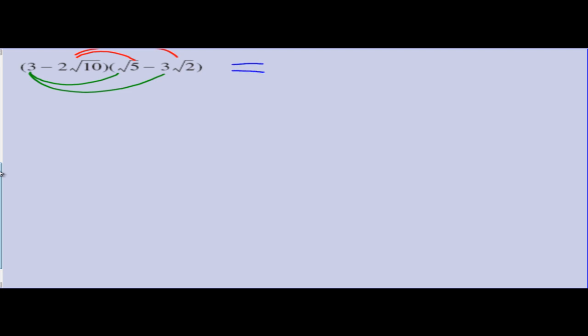Equals, now I might keep these in colour just to make it a little easier to see. We have the little one, 3 times the square root of 5 plus our big green rainbow of 3 times negative 3 root 2. Dealing with our red rainbow now, we have plus 2 root 10 multiplied by the square root of 5 plus our big one, negative 2 root 10 multiplied by negative 3 root 2.